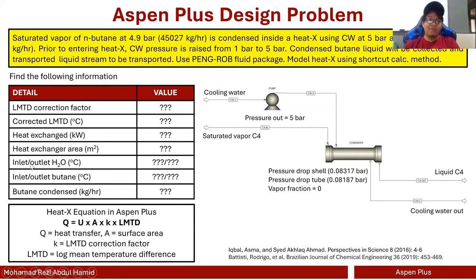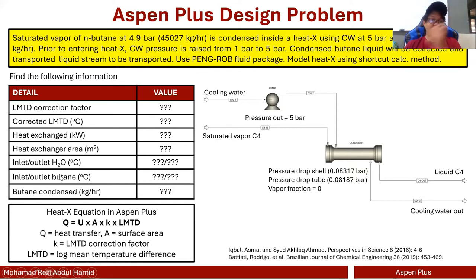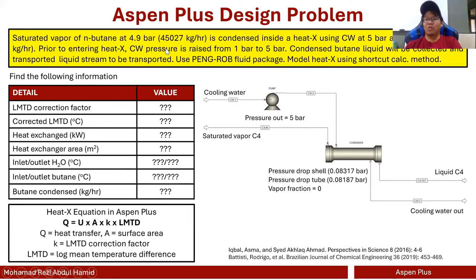These are all the necessary outputs we need to extract from our heat exchanger simulation: the LMTD correction factor, the corrected LMTD (log mean temperature difference), how much heat is being transferred, the heat exchanger area, inlet and outlet cooling water temperatures, inlet and outlet butane temperatures, and the amount of butane condensed. Since we are attempting to condense all of the n-butane, the amount to be condensed is 45,027 kg/hr.